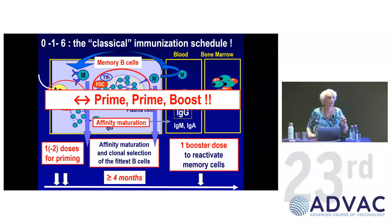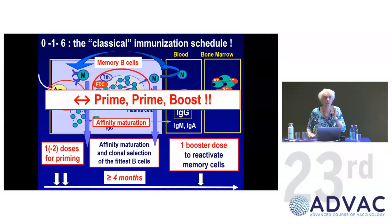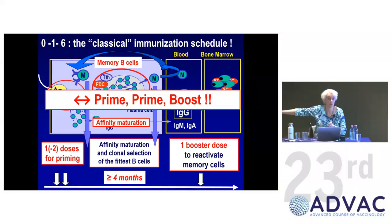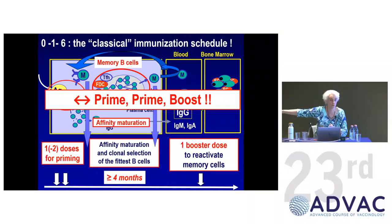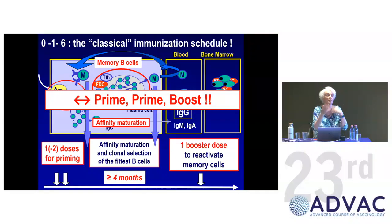We see this with influenza: the first strain of flu you get as a child influences your responses to flu vaccines 50 years down the road. If it was H1N1, you respond better to H1N1; if H3N2, you respond better to H3N2. We see this with COVID and will see it with other pathogens as well.